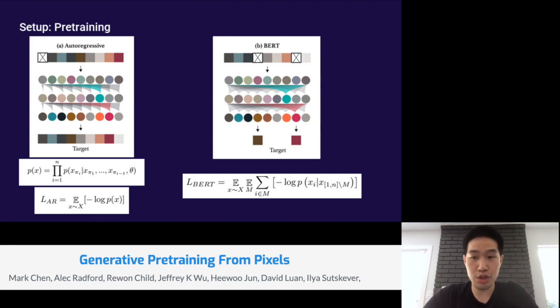Later on, we'll also show some results with the BERT objective. In images, the BERT objective corresponds to masking randomly 15% of the pixels and training our model to recover their contents given the unmasked pixels.